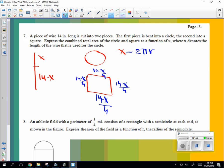All right. So express the combined total area of the circle and the square as a function of X. Okay. So we're going to look at the total area. Let's do the square first. What's the area of the square going to be? 14 minus X over four squared. That's the area of the square.